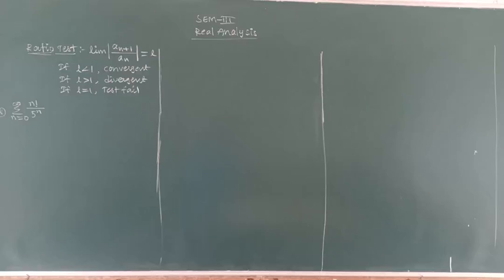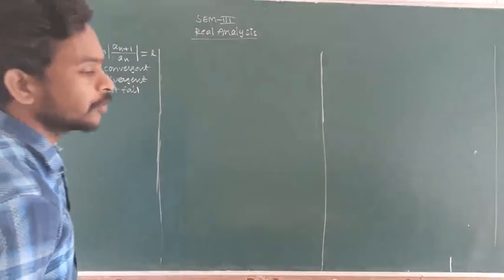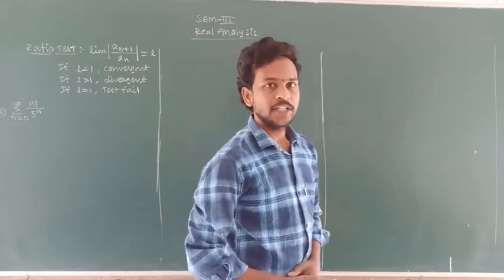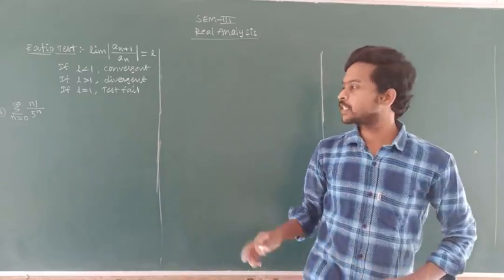First question: sum of n equals 0 to infinity of n factorial by 5 to the power of n. So a_n equals n factorial by 5 to the power of n. We have the ratio test here.